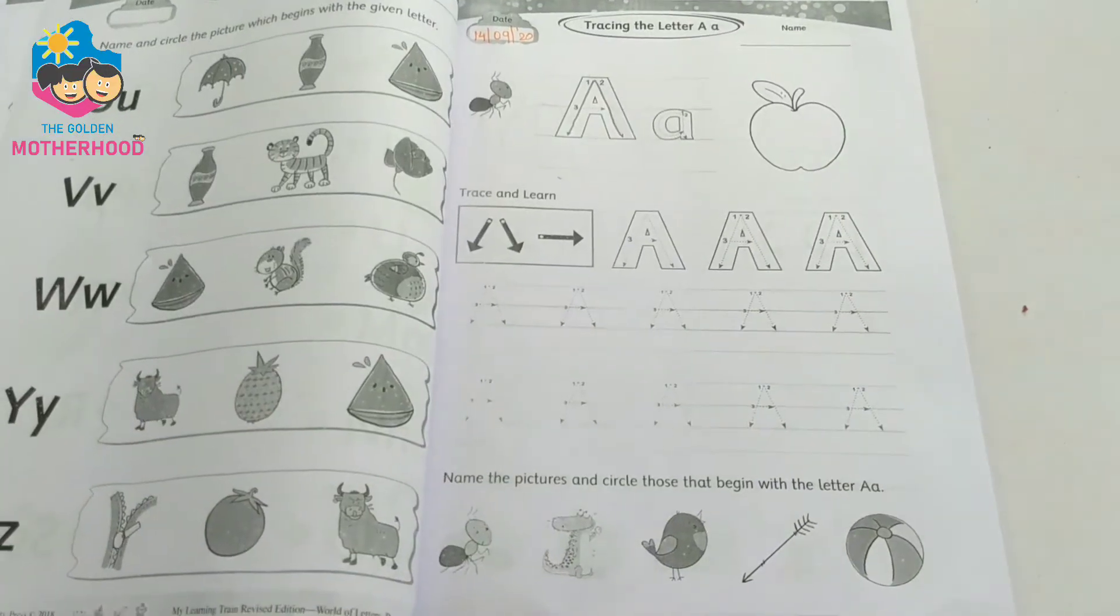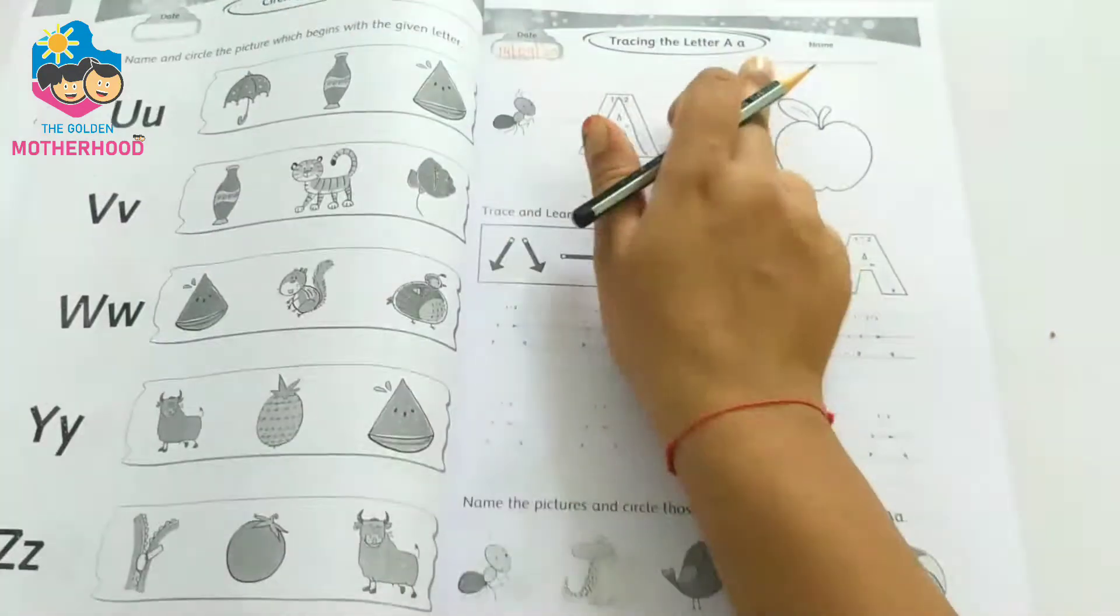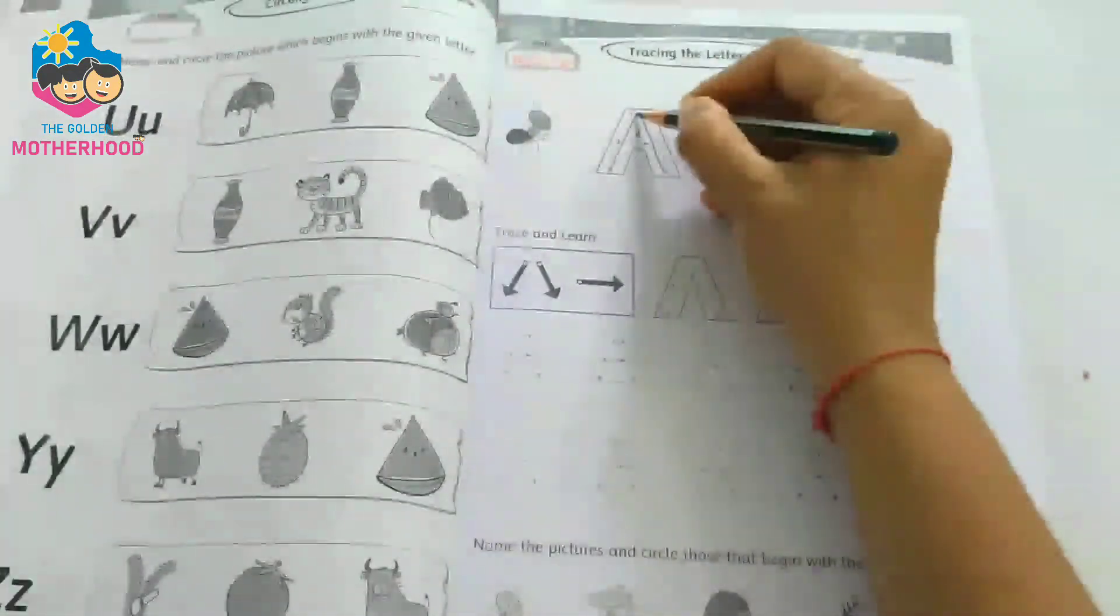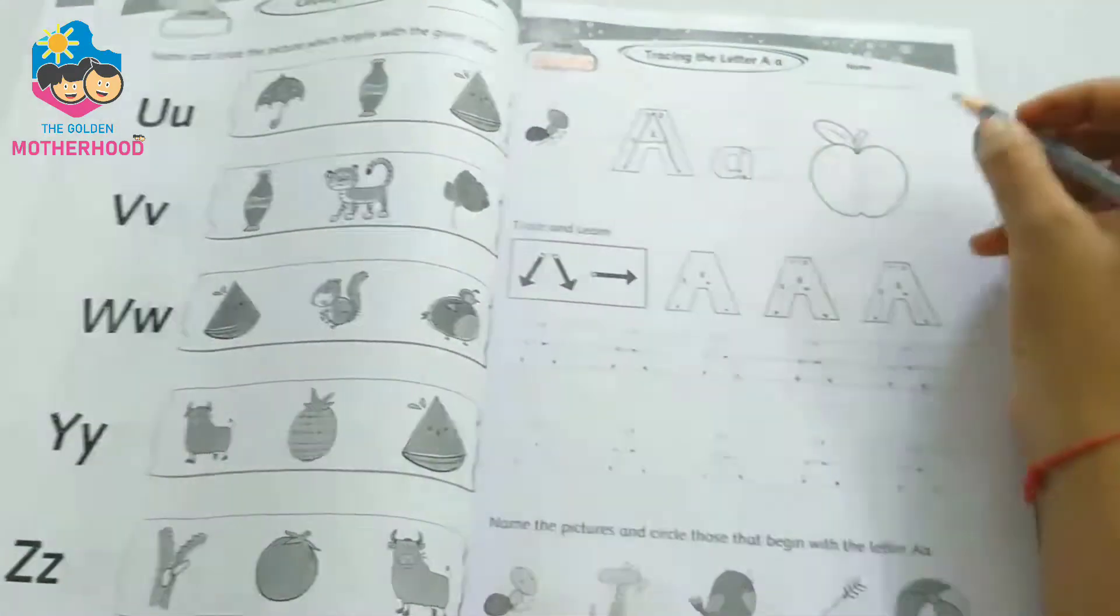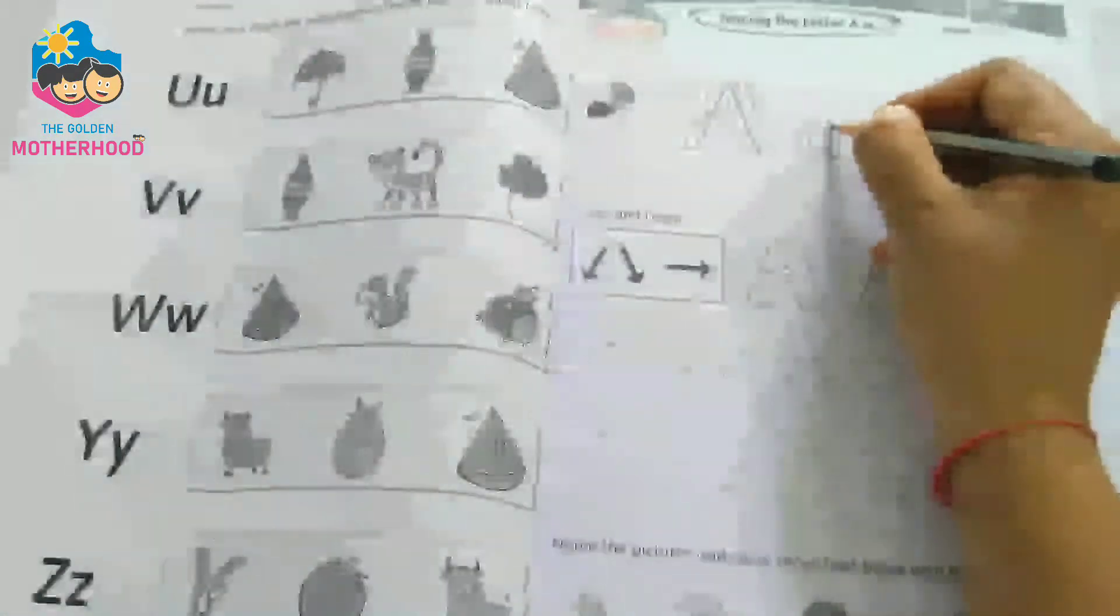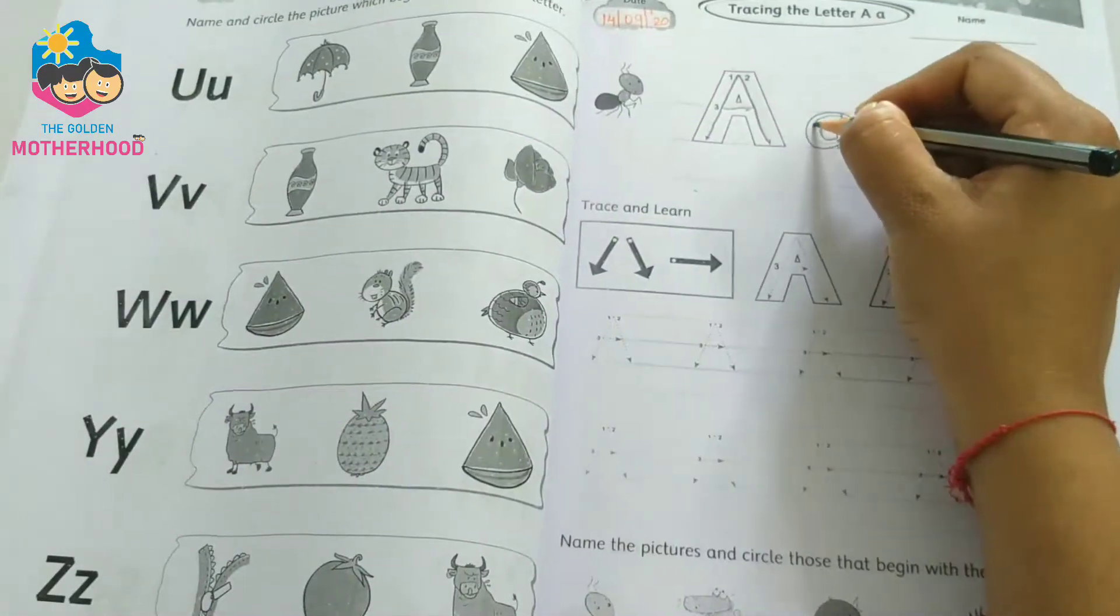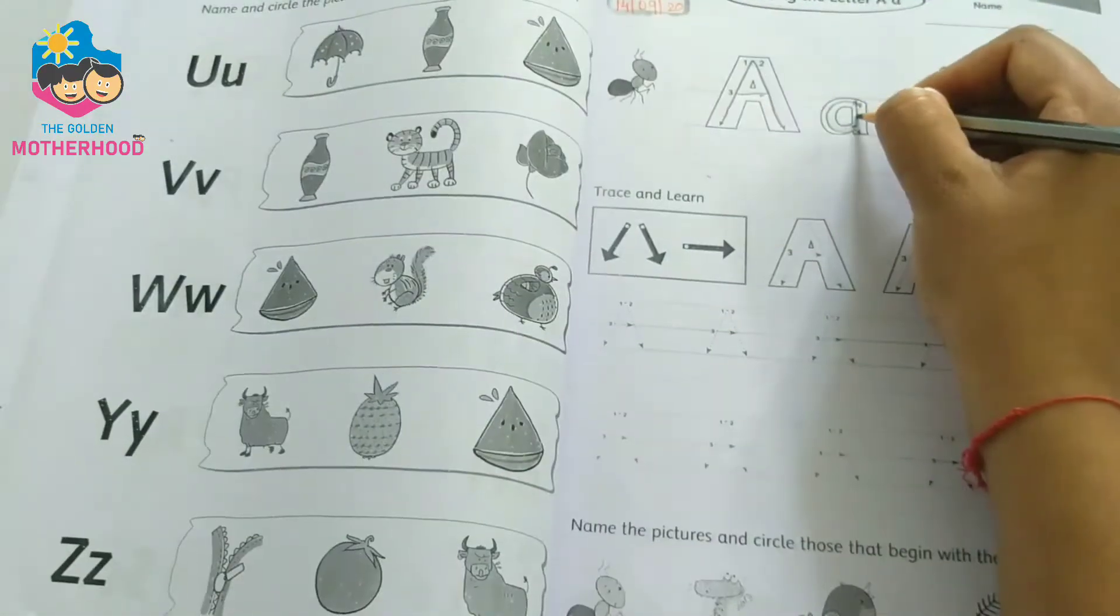Move to page number 38. Tracing the letter A. One slant line, another slant line and one sleeping line. A for ant. Small A: one forward curve and one standing line.